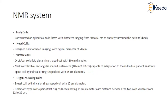Body coils: constructed as cylindrical coil forms with a diameter ranging from 50 to 60 cm to entirely surround the patient body. Head coils: designed only for head imaging with a typical diameter of 28 cm. Surface coil — orbit or ear coil: flat, planar, ring-shaped coil with a 10 cm diameter.